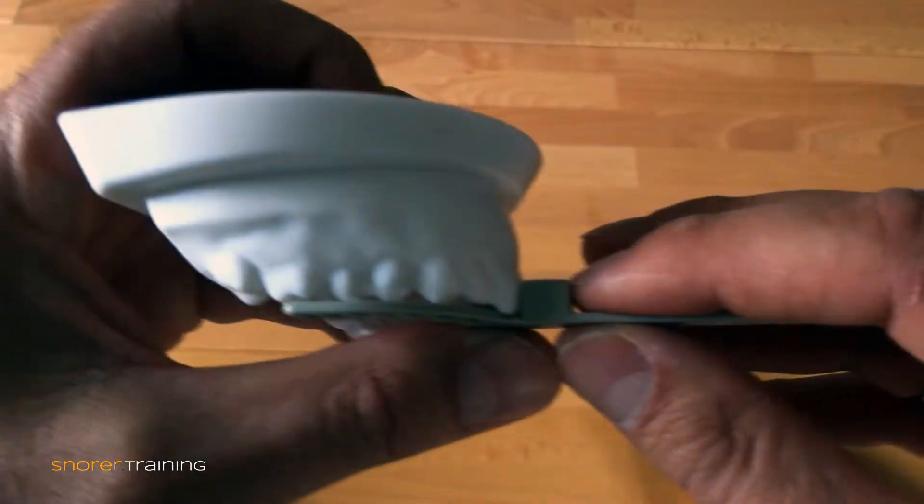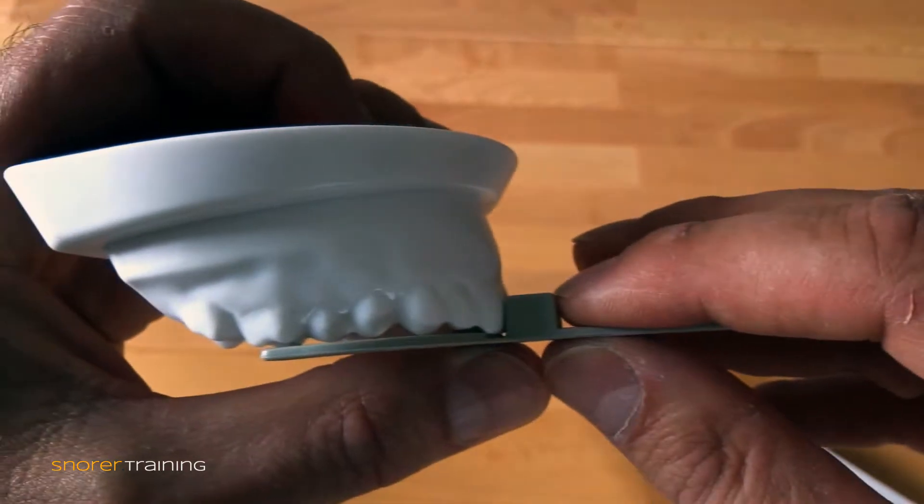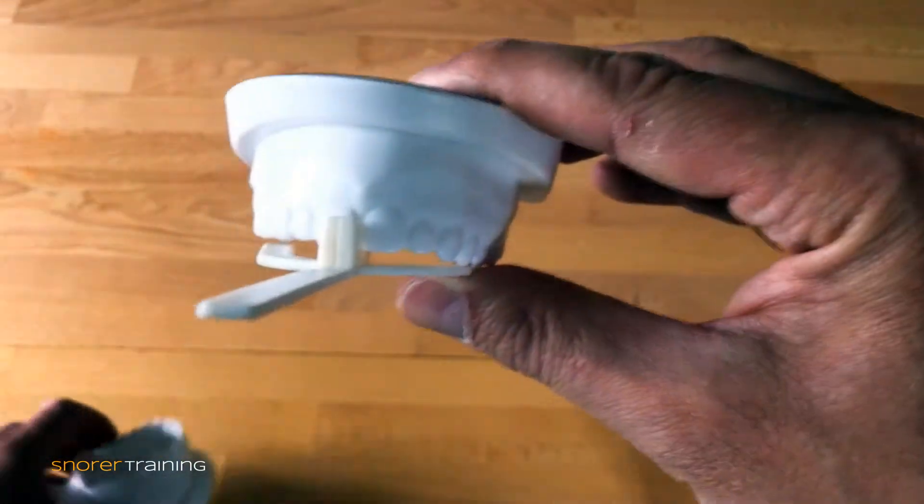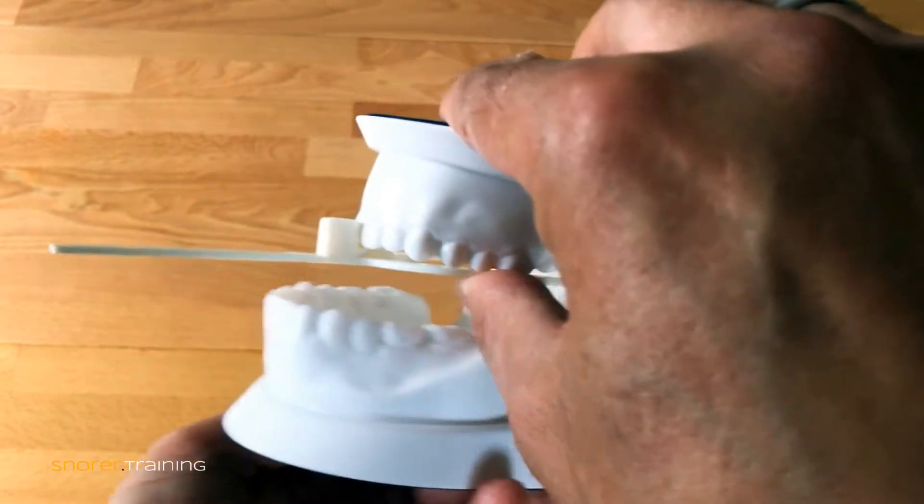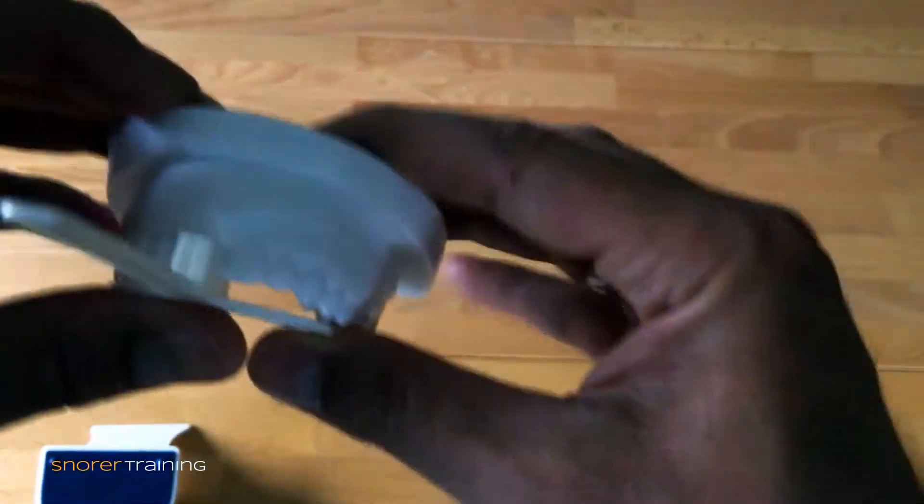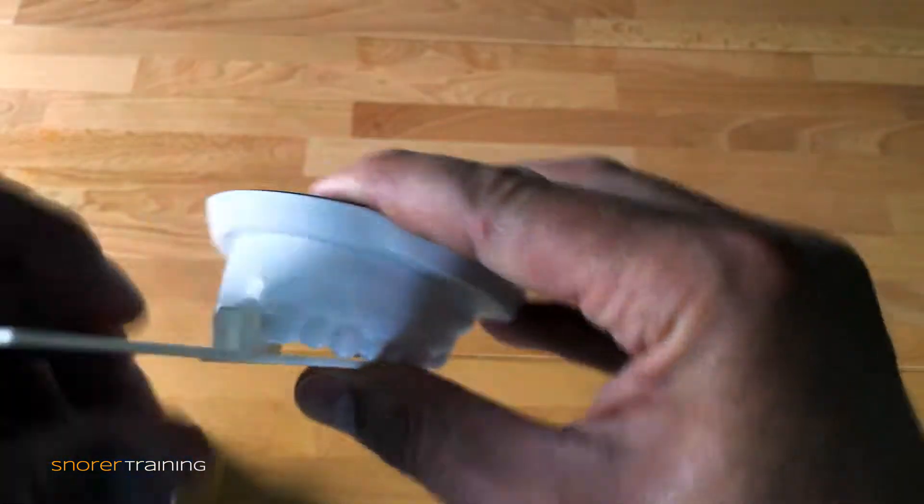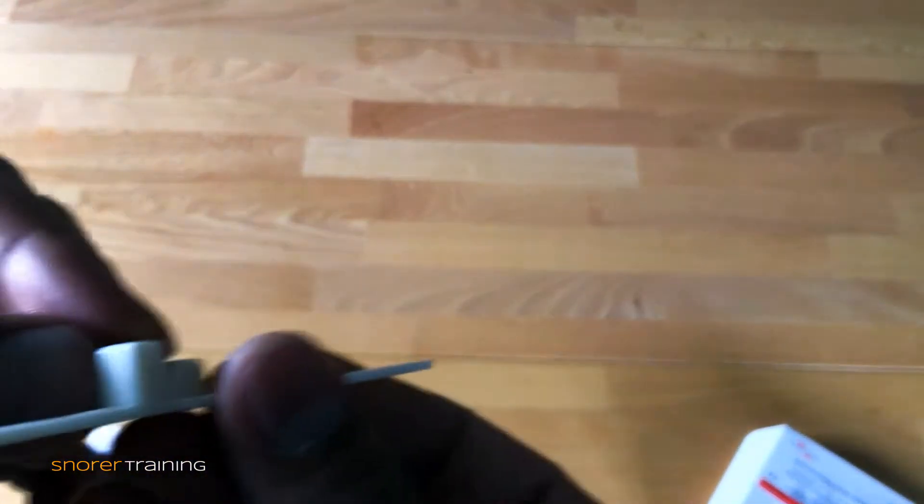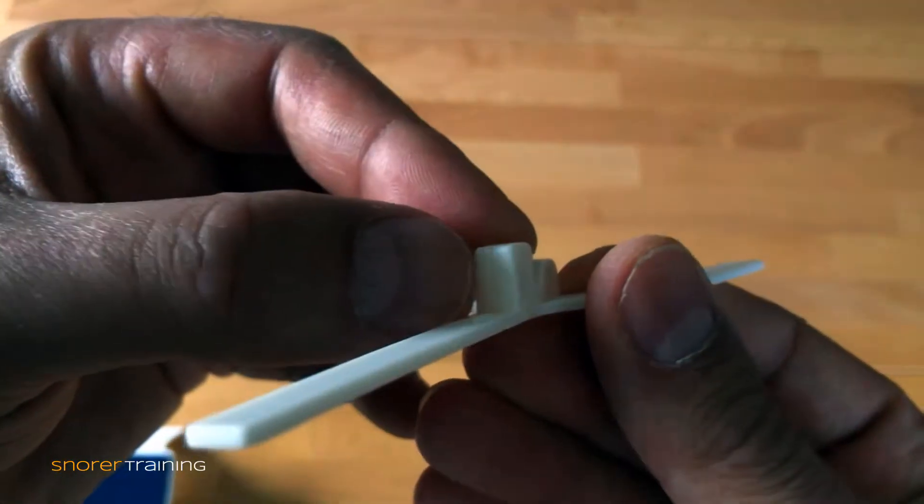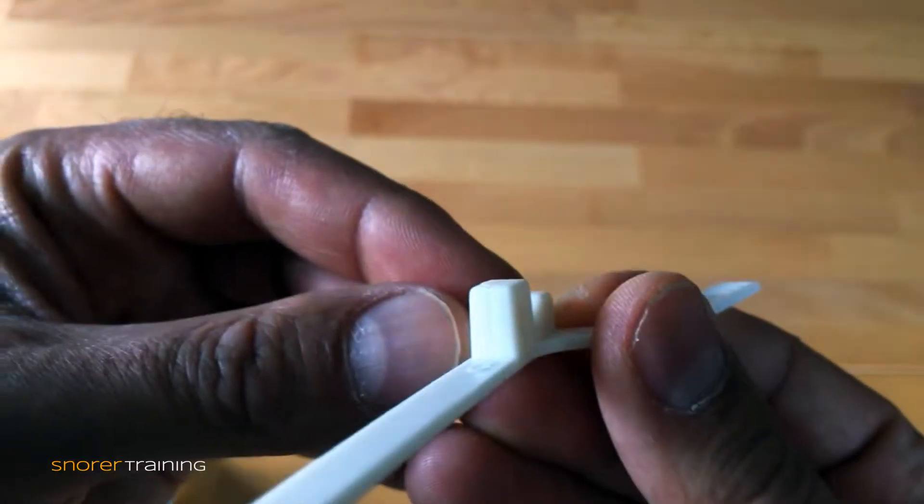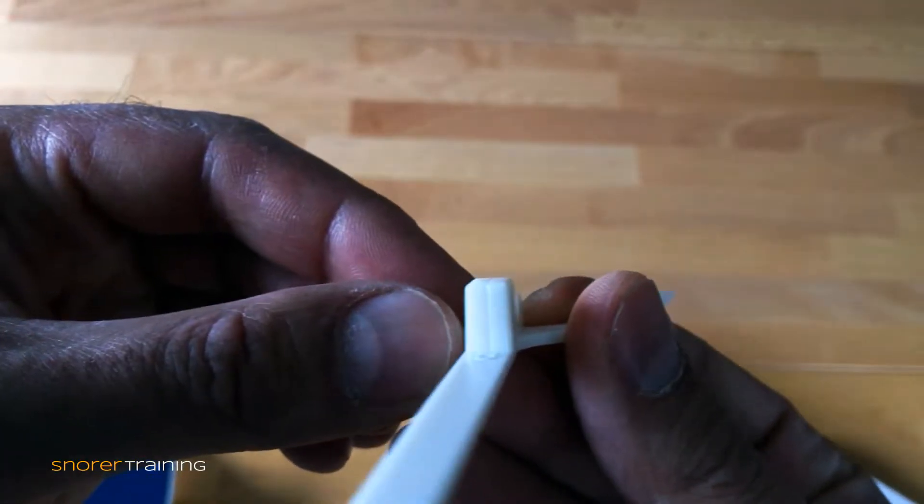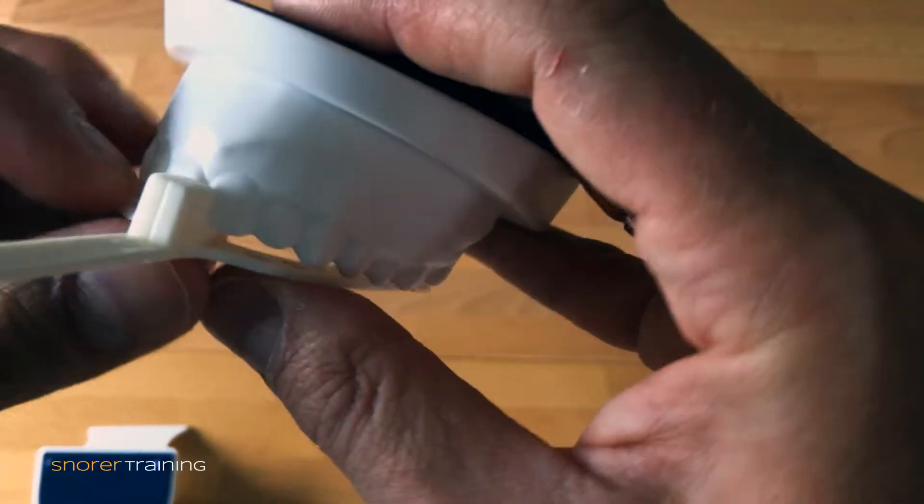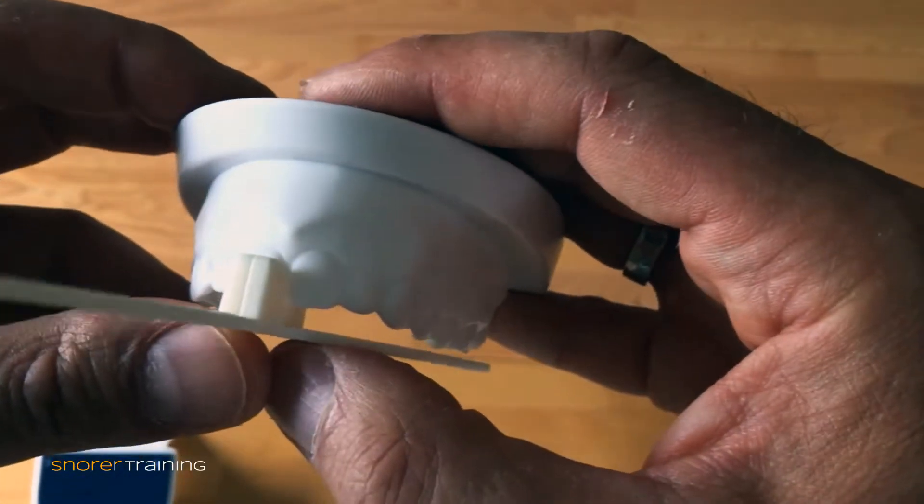Two millimeters of incisal opening, okay? Body of the jaw moving forward. There's a line on the bite fork, just about make it out there. That helps you to line up with the dental midline if they have coincidental facial and dental midlines.